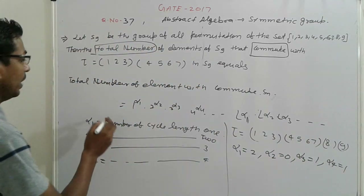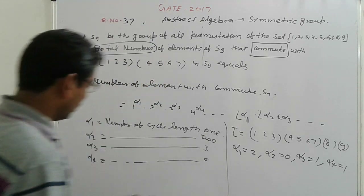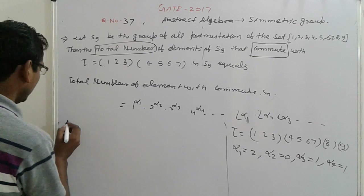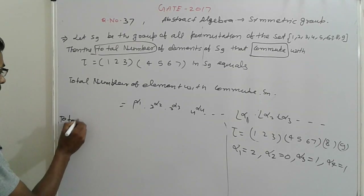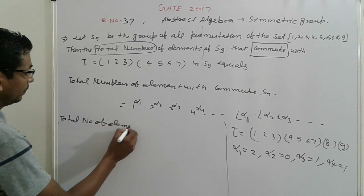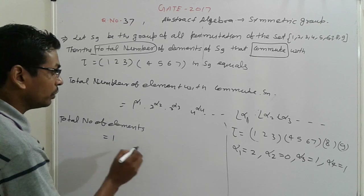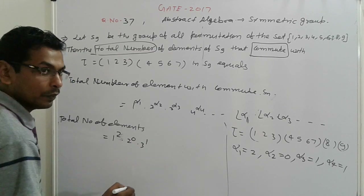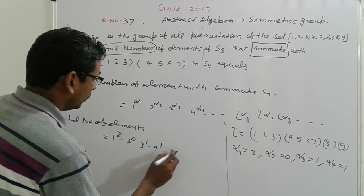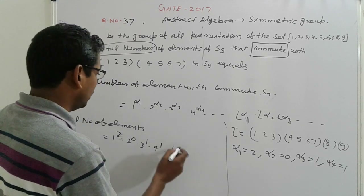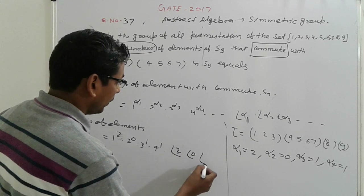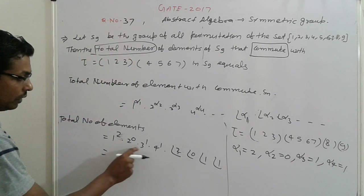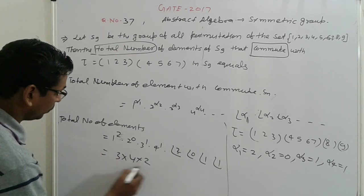Now use these values and simplify. The total number of elements equals: 1 raised to 2, times 2 raised to 0, times 3 raised to 1, times 4 raised to 1, times factorial 2, times factorial 0, times factorial 1, times factorial 1. That gives 1 times 1 times 3 times 4 times 2 times 1 times 1 times 1, which equals 20. So that is your answer.